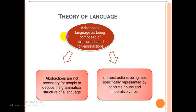What is the theory of language in this method? Asher sees language as being composed of abstractions and non-abstractions. Abstractions are not necessary for people to decode the grammatical rule of a language. Non-abstractions are most specifically represented by concrete nouns and imperative verbs.